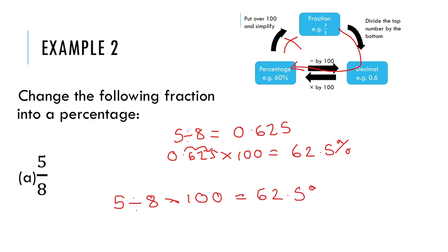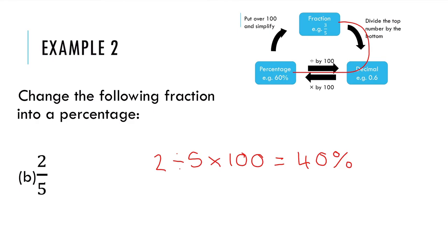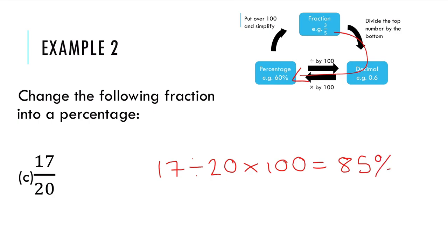You don't need to do it in two separate steps if you don't want to. For B, we've got 2 divided by 5. I'm going to do all of this in one step — divide the top by the bottom and multiply by 100, because it doesn't ask for the decimal so I don't need to show it. That gives me 40%. And for C, doing it all in one step: 17 divided by 20 times 100 equals 85%.